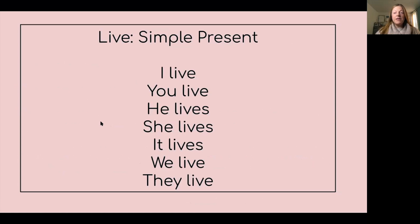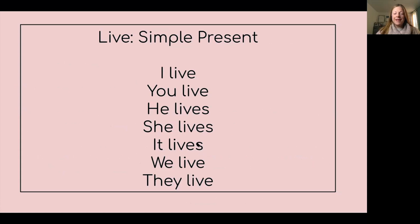Let's take a look at the conjugation for the verb 'live' in the simple present. And again, for he, she, and it, the verb gets an S — he lives, she lives, it lives.